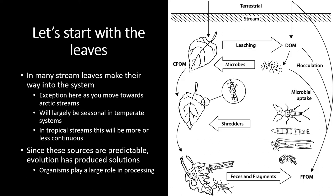There are systems where leaf material is fairly rare, such as arctic systems where trees are not common. Leaves are often very important in temperate zones, and can also be very important in tropical streams. In temperate zones, there's a large fall event where a lot of material enters suddenly. In tropical zones, leaf fall can be more continuous year-round, and because trees are growing year-round with limited algal production, those streams can be very highly reliant on these allochthonous sources. Since these sources are predictable, you will see lots of organisms that have evolved to take advantage of them.